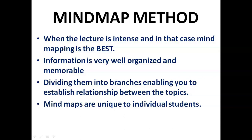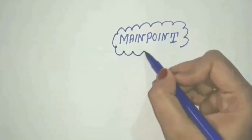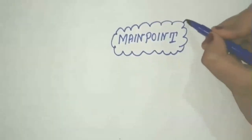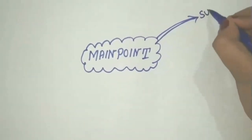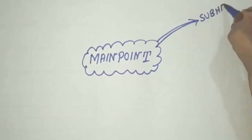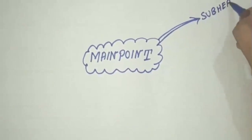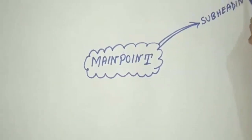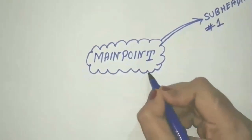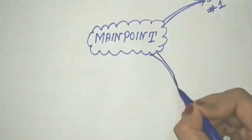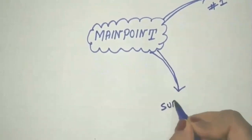Let's learn how to make a mind map. Start by writing the main topic at the center or top. Then keep dividing it into subtopics left and right as you move on.